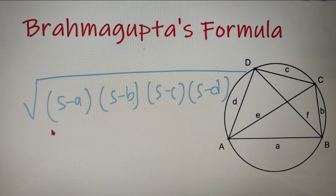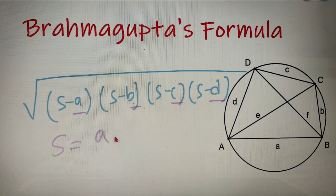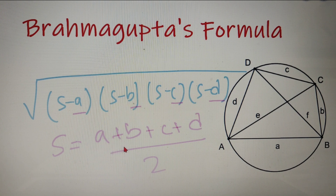The formula is: Area = √[(S − A)(S − B)(S − C)(S − D)], where A, B, C, and D are the lengths of the sides of the quadrilateral, and S is the semi-perimeter of the quadrilateral, which is equal to (A + B + C + D) / 2. By the help of this Brahmagupta's formula we can calculate the area of any cyclic quadrilateral, given that the lengths of all the sides are given.